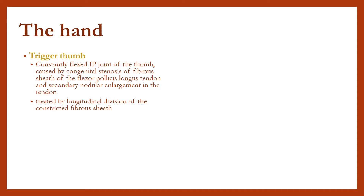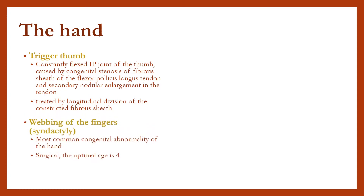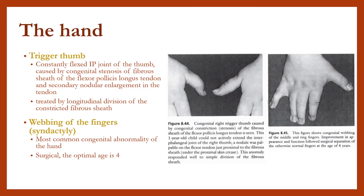Webbing of the fingers, or syndactyly, is the most common congenital abnormality of the hand. Treatment is surgical, with the optimal age being four years.